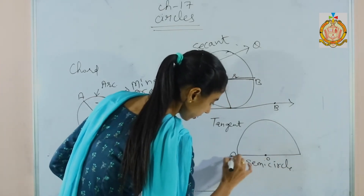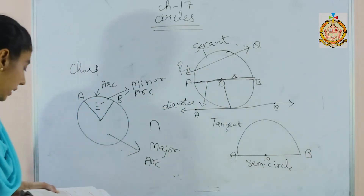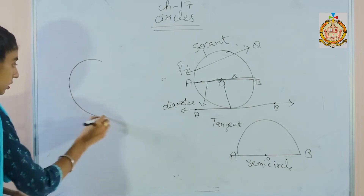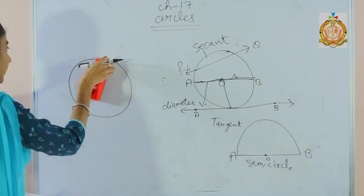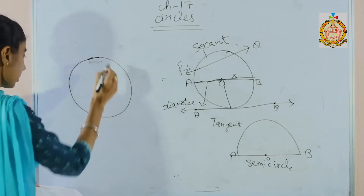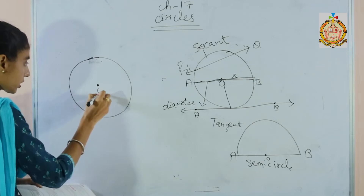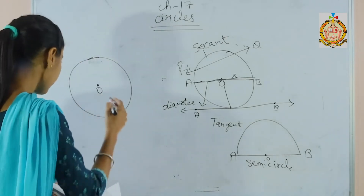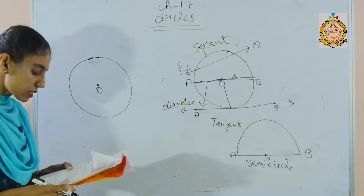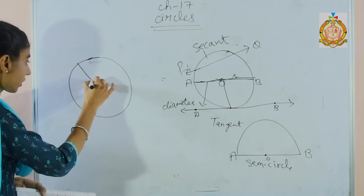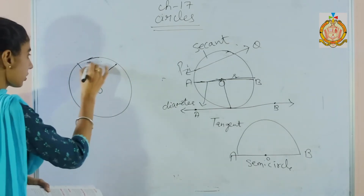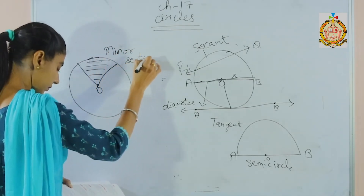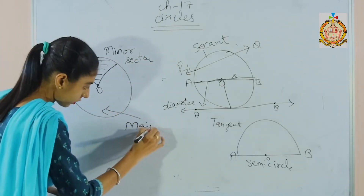This is the center, and these are the two points. Next is the sector of a circle. First of all, you have to draw a circle. The shaded portion is called the minor sector, and this is the major sector.